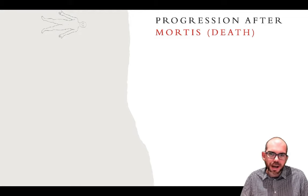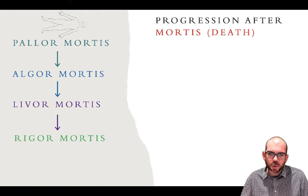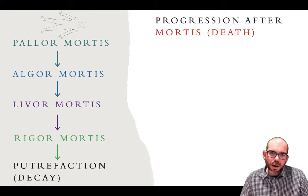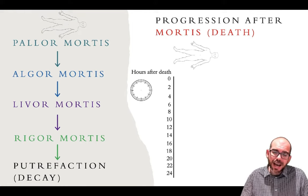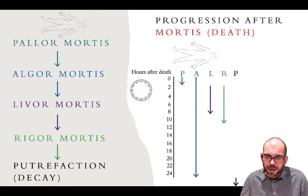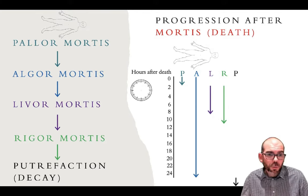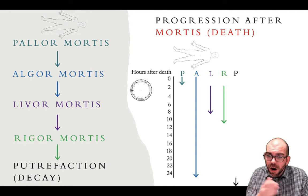Death is also referred to as mortis. The progression of the body after death goes through the following phases: pallor mortis, algor mortis, livor mortis, rigor mortis, and putrefaction or decay. These stages are not strictly sequential — they overlap one another and can occur at the same time. Pallor happens concurrent with algor, algor is occurring when livor and rigor are occurring, and putrefaction occurs after.